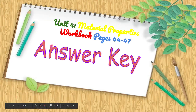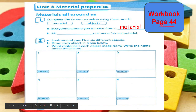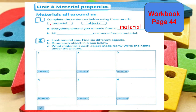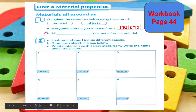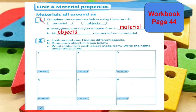Now let's look at the answer key if you answered all correctly. Page 44, Materials All Around Us. Letter A: everything around you is made from a material. Letter B: all objects are made from a material. So we have completed the sentences.